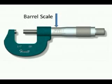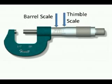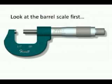Okay, so there are two scales to look at on a micrometer, the barrel scale and the thimble scale. We'll look at the barrel scale first.